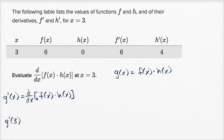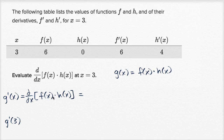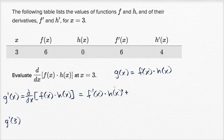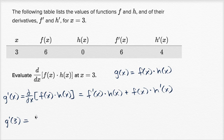To do that, let's think about what this is doing. They're asking us to take the derivative of the product of two functions, so the product rule could prove useful here. The product rule says this equals the derivative of the first function, f prime of x, times the second function h of x — not taking its derivative — plus the first function f of x times the derivative of the second function, h prime of x. So g prime of three equals f prime of three times h of three, plus f of three times h prime of three.